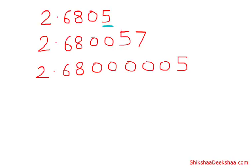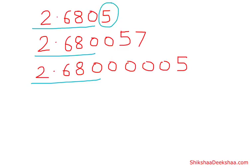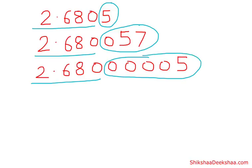But if the last digit is not zero, then you cannot ignore those zeros. Like in these examples, the last digit is not zero, so we can't ignore these zeros — they do have some value. Though the first few digits are the same, we can't call them equivalent decimals, because one has 5 as the last digit, another has 057, and another has 000005 as the last digits. So they are not the same.